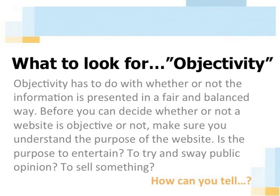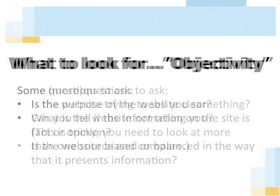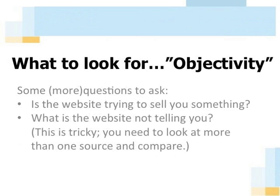Its job is to sell you a product, not make you have second thoughts about it. But we understand that about advertising. Bias isn't always so obvious, so you need to make sure you carefully evaluate the information on a website to decide whether or not it's given you both sides of the story. So here are some questions you can ask about objectivity. Is the purpose of the website clear? Can you tell if the information on the site is fact or opinion? Is the website biased or balanced in the way that it presents information? Is the website trying to sell you something? And finally, what is the website not telling you? This can be tricky, so sometimes you need to look at more than one source and compare.